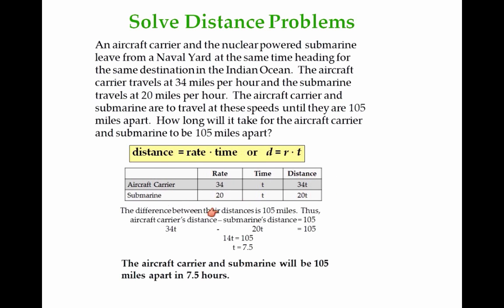It's a good idea to make a little table chart like that and record what we know here. In this case, we know the rate for the aircraft and the submarine. We're going to record it here. One is 34, the other one is 20. The time is the same for both of them. I'm going to call it T.